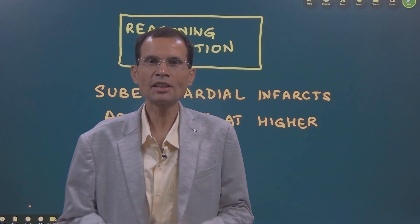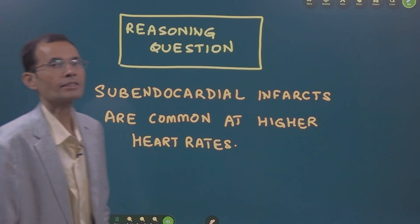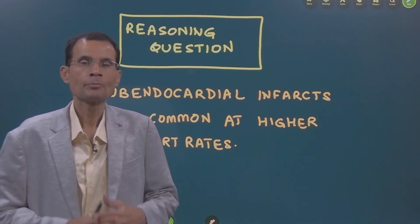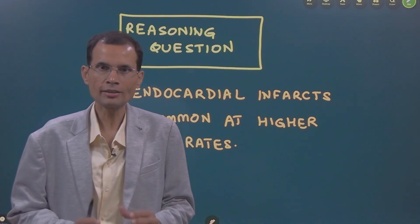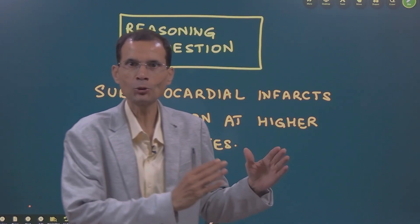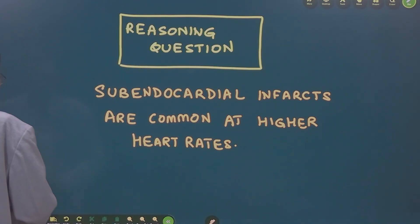Hello friends, here is a reasoning question. Let's see what the question is and what's the answer. Subendocardial infarcts are common at higher heart rates. Explain why. Now, there are three different points that you need to understand and then join those dots to answer the question completely. Let's understand this.